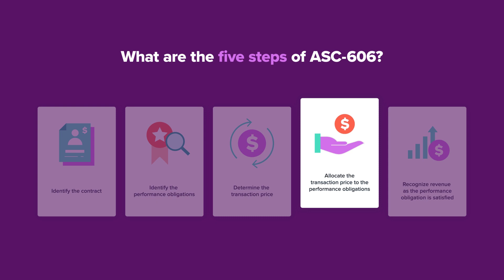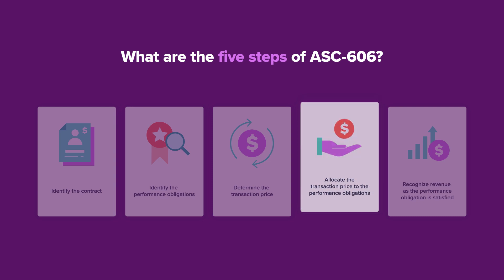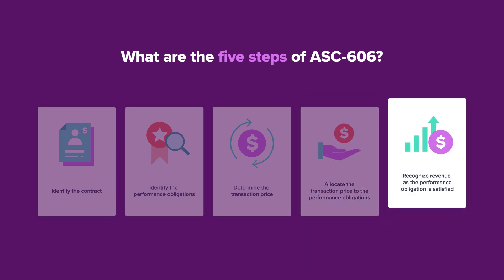Number four: allocate the transaction price across each separate performance obligation in the contract based on its relative standalone selling price, also known as SSP. This is often determined by numerous data points and calculation methods. Number five: finally, you can recognize revenue as each performance obligation is satisfied.